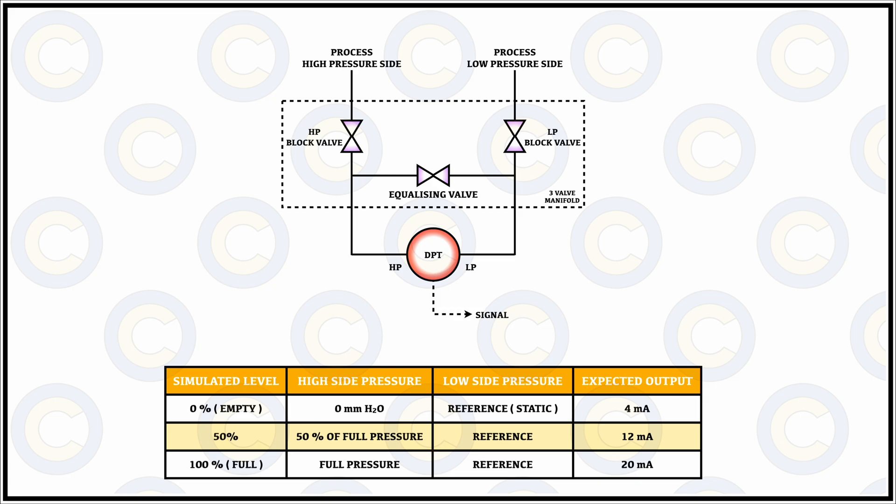Now imagine a situation where you have to put a new DP transmitter. Before putting a new DP transmitter you have to carry out the exact process of calibration for the DP transmitter as you would have done for the normal or the PMS or the annual routine of an already existing DP transmitter in the system.